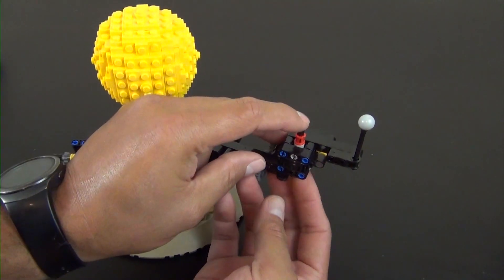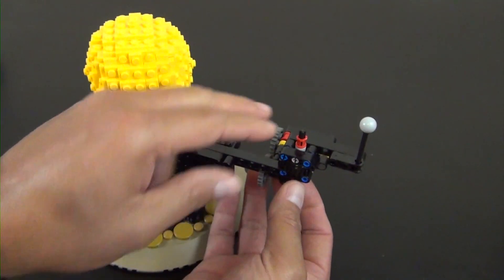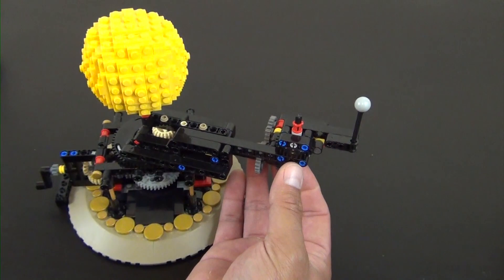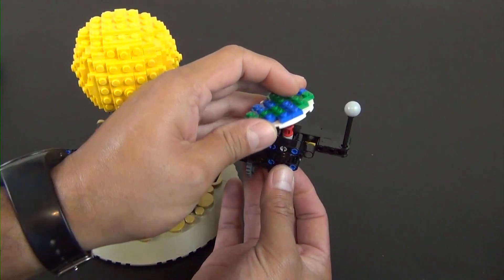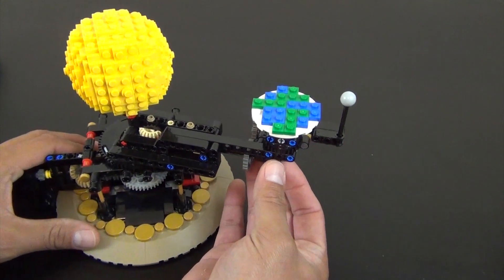So there's an axle that runs through right under this gear right here and we just need to pop the axle a little bit further through, and then we take our Earth model and put it on there.